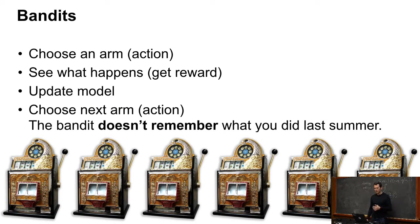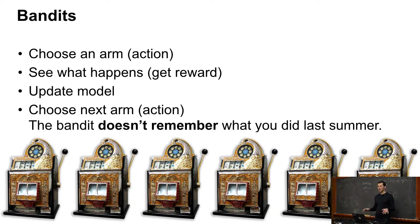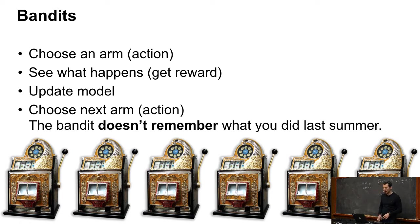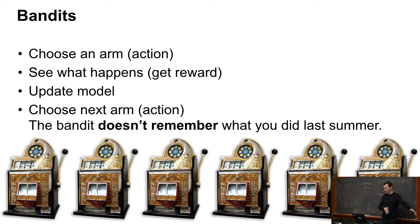Bandits: you have some degree of exploration — you can pull an arm, see what happens, and update the model. These are six one-armed bandits — the old-fashioned kind before computers. If you go to Vegas now, don't assume the returns from different bandits are in any way under your control. But in the old style, maybe there were some mechanical tolerances and one was a bit more worn out than another, so it was in your interest to figure out which bandit to play. The good thing is the bandit doesn't remember what you did previously, so you just want to find the best arm, and there are efficient algorithms for that.